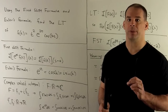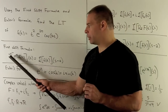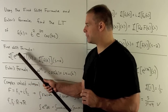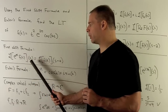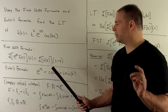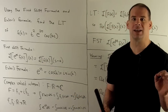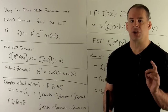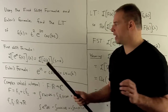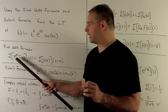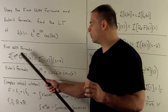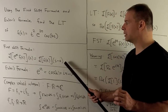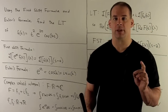Let's review the first shift rule. It says: take the Laplace transform of a function times e^(at), evaluated at s. What comes out is the Laplace transform of that function evaluated at s minus a. So if I shift my function by multiplying by e^(at), I move it to the outside by shifting by a and then subtracting. That's our first shift formula.